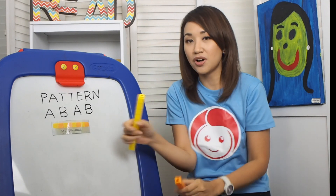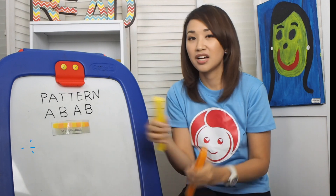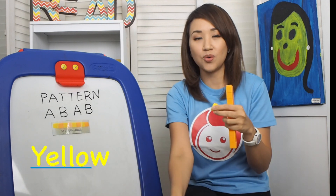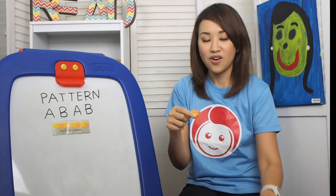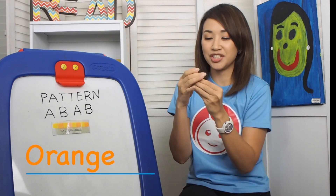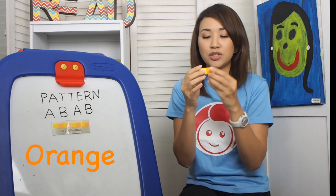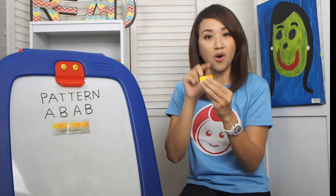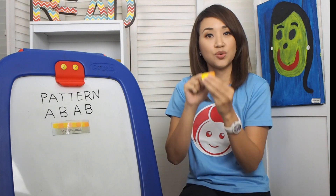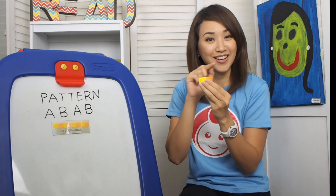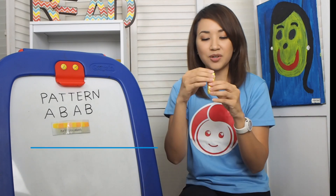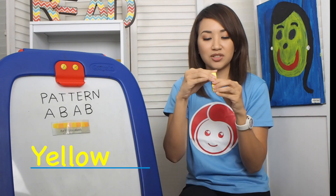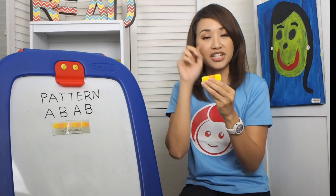So what is the first color? Yellow. What is after yellow? Orange. Let's look at the pattern. Yellow, orange. What is after orange? Very good. Yellow. Let's look at the pattern. Yellow, orange. Yellow.